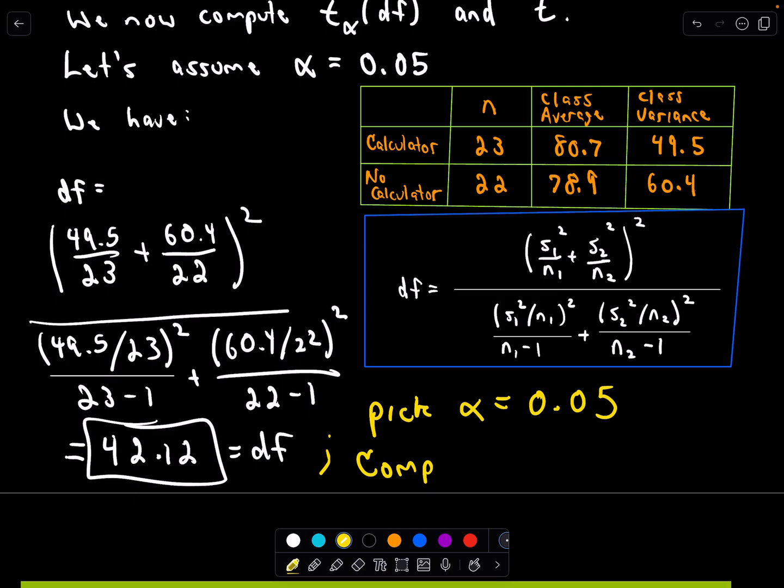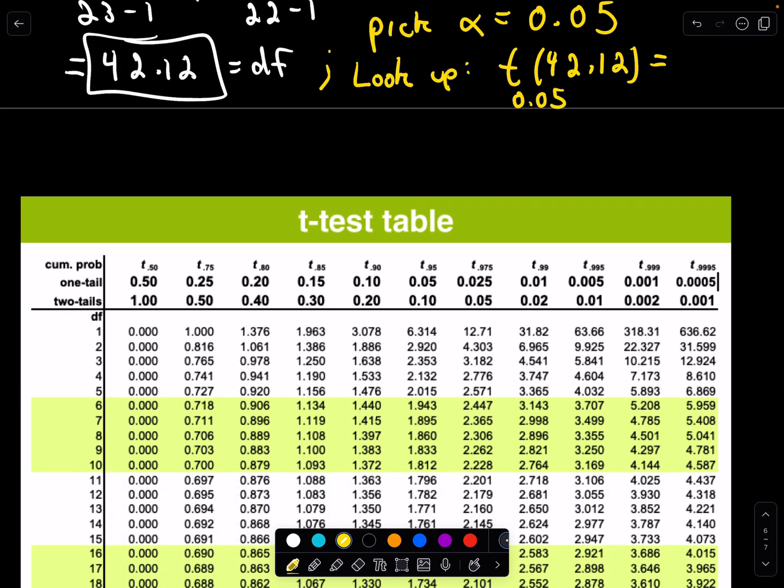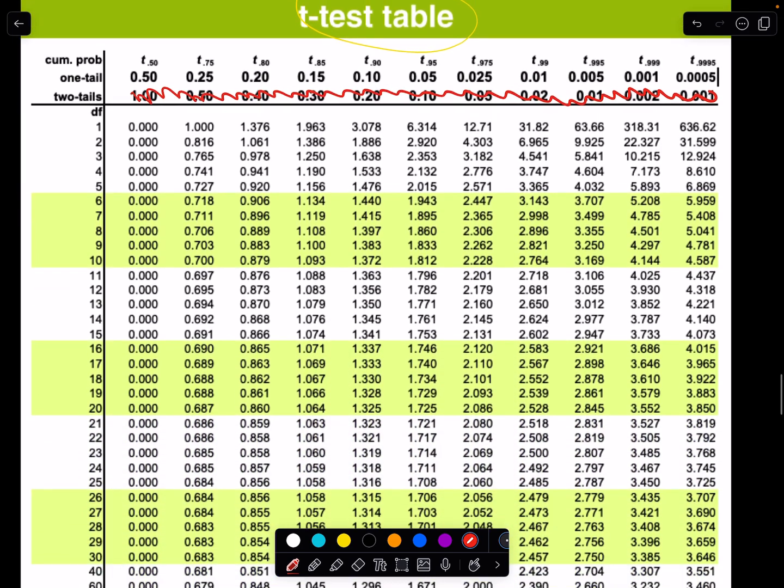Okay so that's going to be my degrees of freedom and let's just go ahead and pick our α to be equal to 0.05. So what we have to do is look up from a table this value t. We've got our degrees of freedom as 42.12 and our α is 0.05. So here's my table. Notice this t-test table has one tailed and two tails. We're not using a two tailed test so let's forget about this bottom part. So do be careful about that.